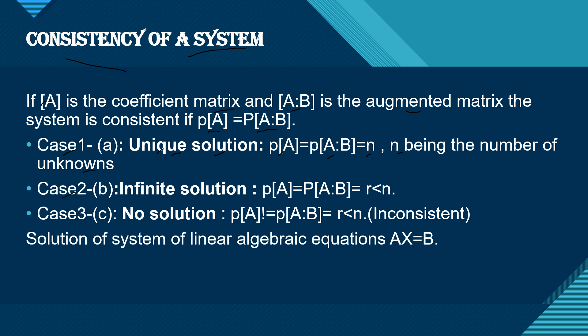Case 2: Infinite solution. If ρ(A) = ρ[A|B] = r < n, where r is the rank and n is the number of unknowns, then the system has infinite solutions.